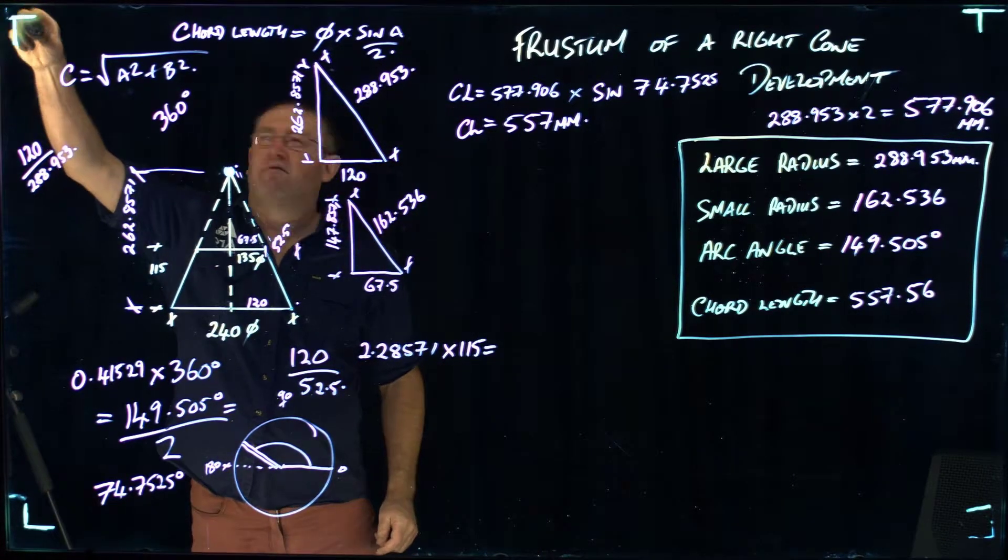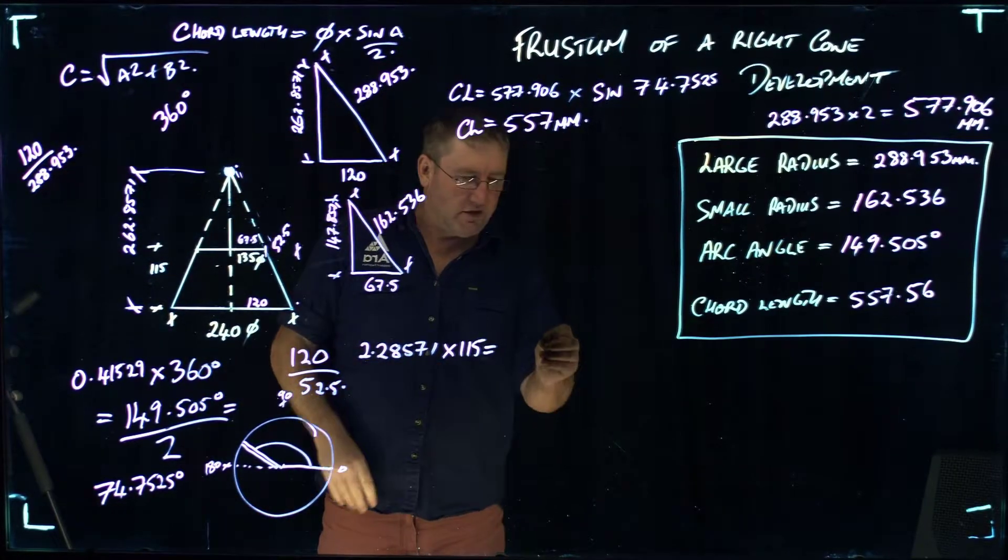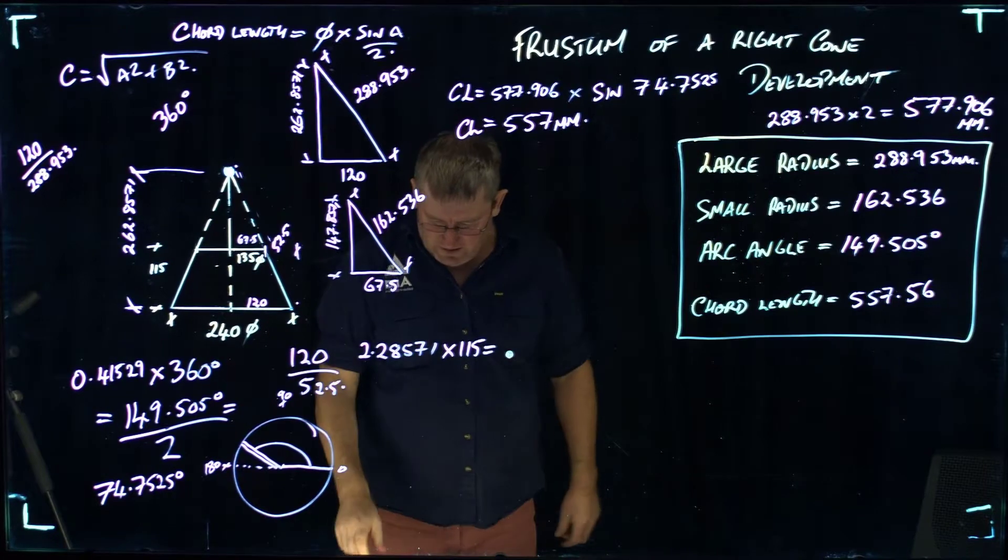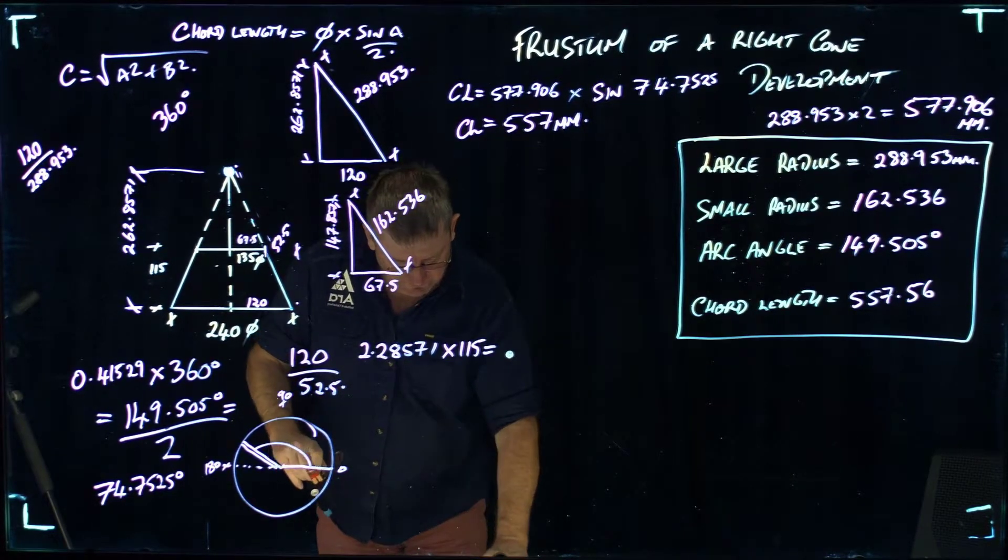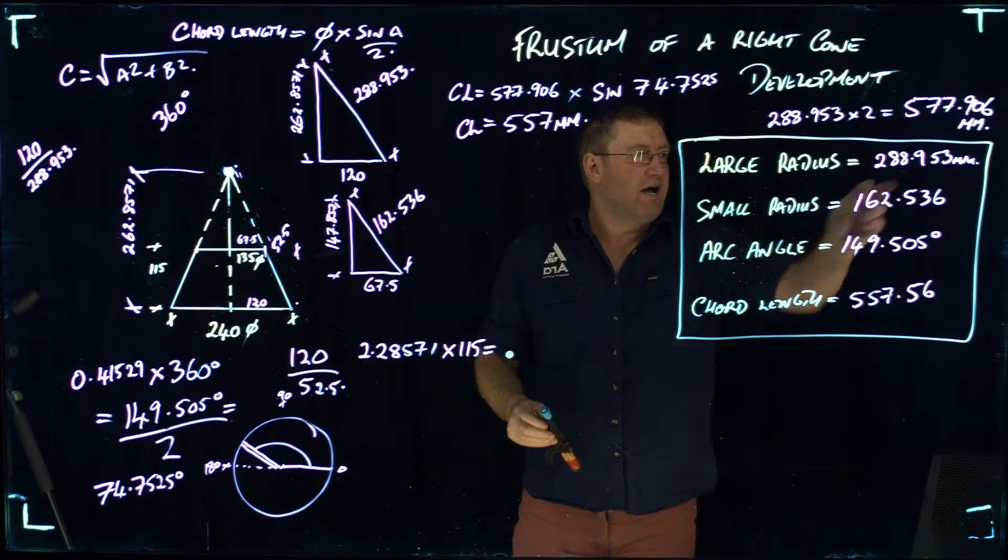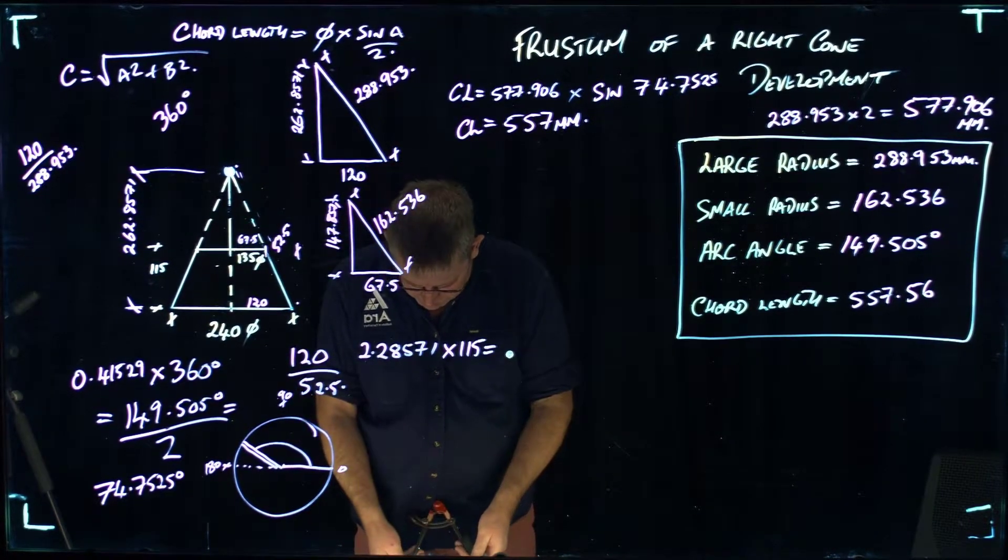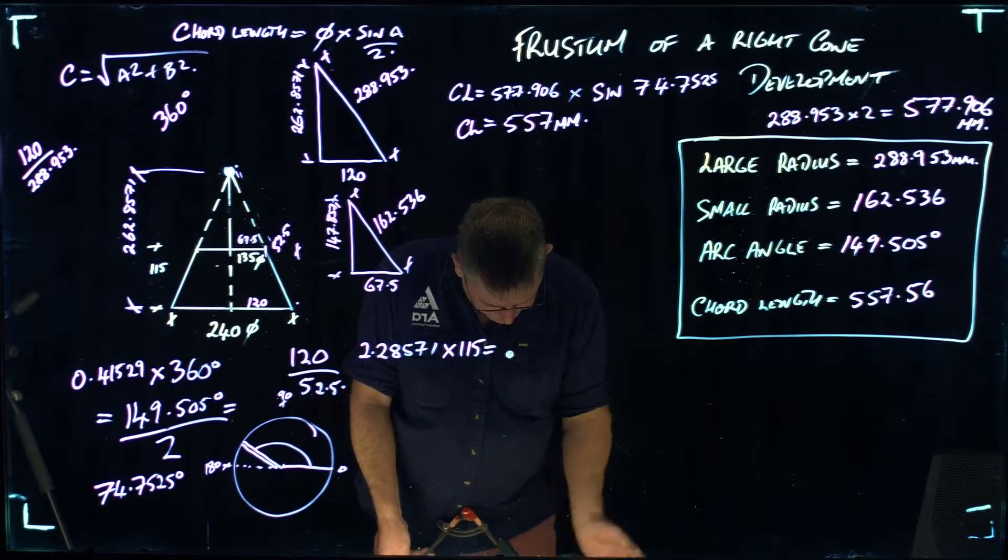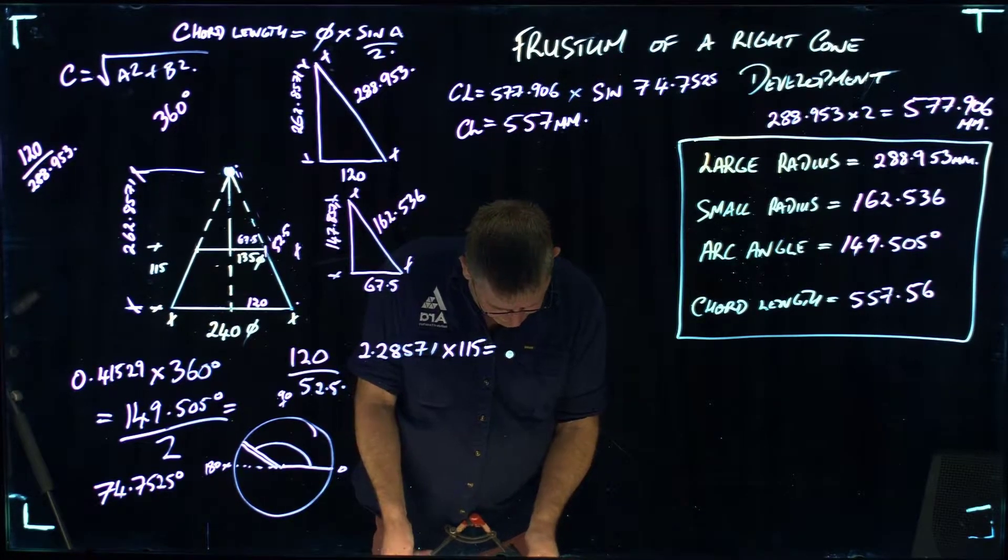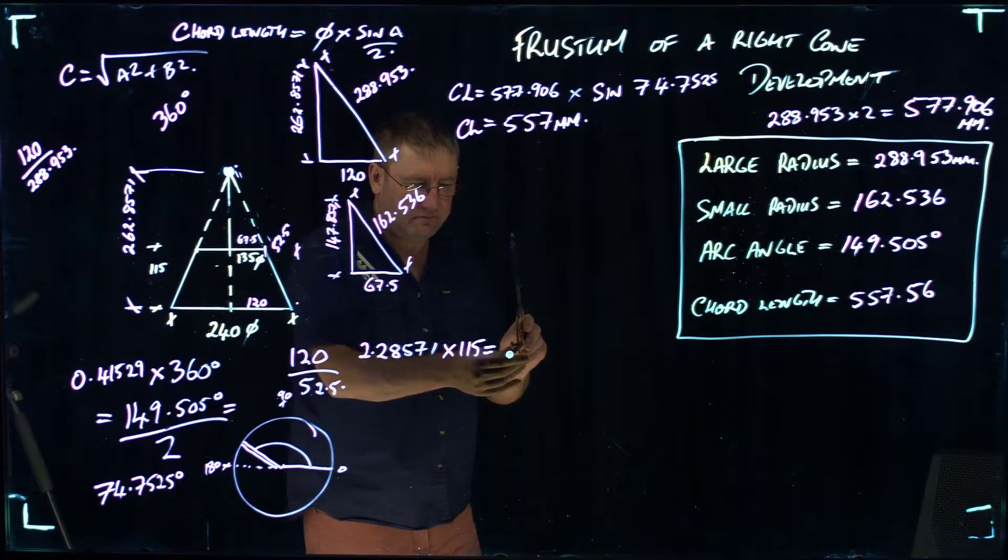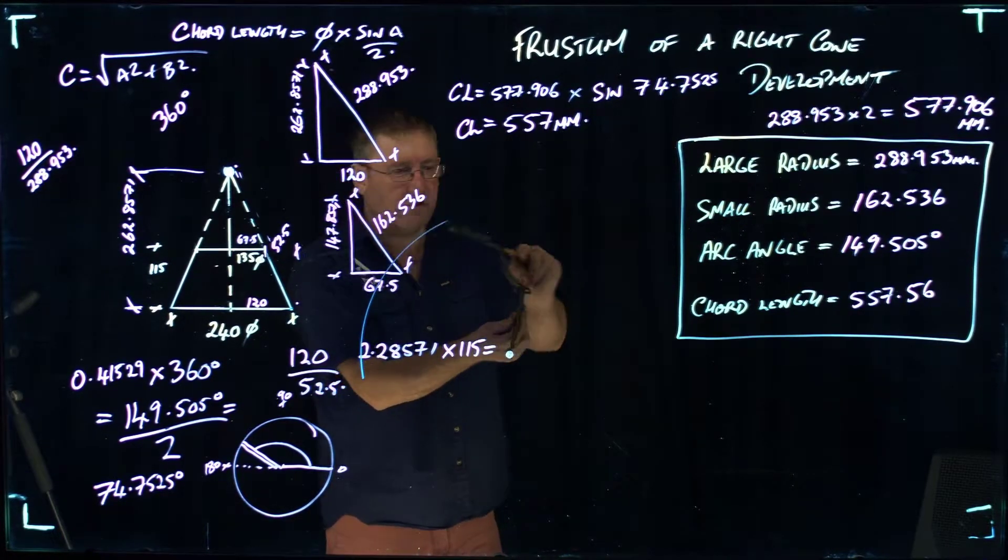What I'm going to do, if I can fit it on the board, is I'm going to put a dimple on the board, and I'm going to set my dividers up. My large radius is 288 millimeters. Setting my compass at that. Now I will draw the full circle.